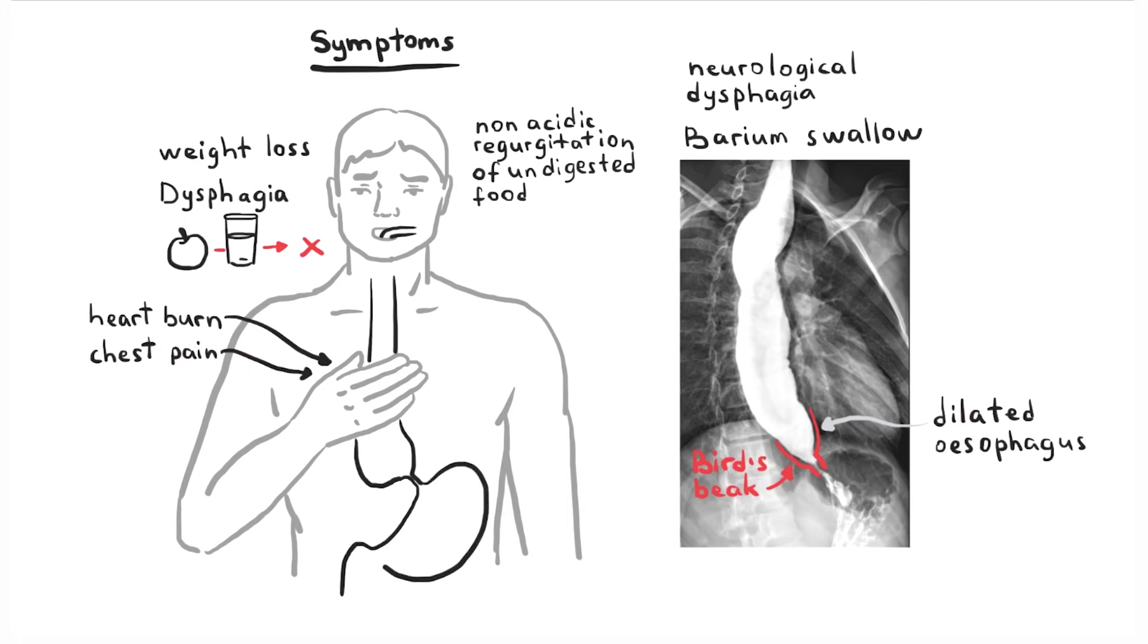Classically, the visual findings of achalasia on endoscopy include a dilated esophagus and a puckered lower esophageal sphincter. Endoscopy also reveals retained foods and saliva with no signs of mechanical obstruction.